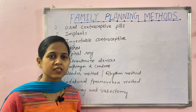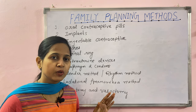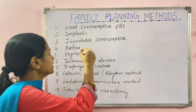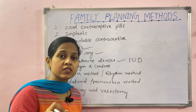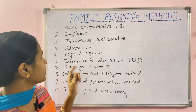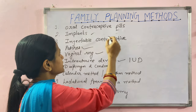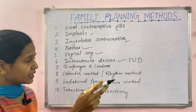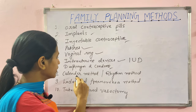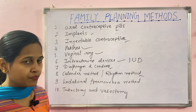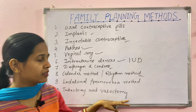Hello students, welcome back to Sweta Park Nursing Academy. This is part two of the family planning methods video. In part one, I covered patches, vaginal ring, and intrauterine device (IUD). There are 10 contraceptive methods in total: oral contraceptive pills, implants, injectable contraceptives, patches, vaginal ring, and intrauterine device. In this video, I will cover diaphragm, condom, calendar method, rhythm method, and lactational amenorrhea method. Tubectomy and vasectomy will be covered in the next video.